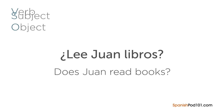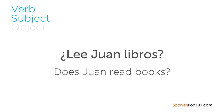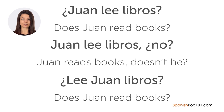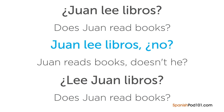'Lee Juan libros?' meaning 'Does Juan read books?' All of these questions mean the same thing, but they're not completely identical — there are tiny nuances. 'Juan lee libros' places greater emphasis on Juan because the subject appears first, as opposed to 'Lee Juan libros?' where the emphasis is on the verb. As you can see, there are many ways to form basic questions in Spanish.